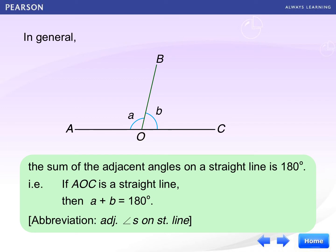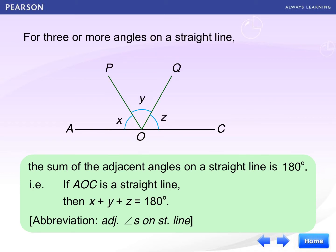We have a short form for this: it is 'adjacent angles on straight line.' Remember, the number of angles can be more than two — three or more angles. If there are three angles on the straight line, we can say that if AOC is a straight line, then X plus Y plus Z equals 180 degrees.